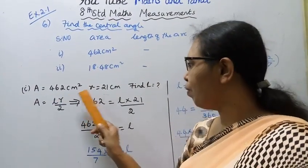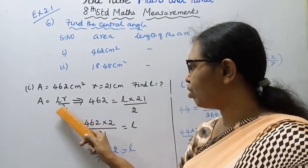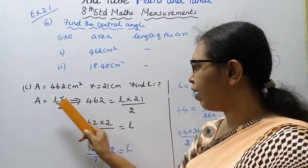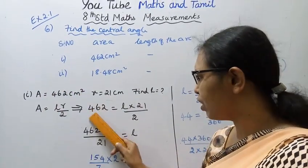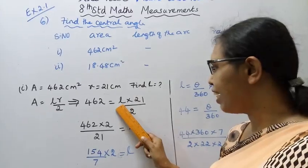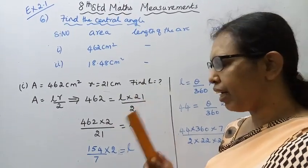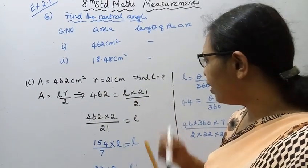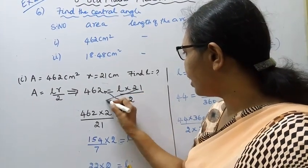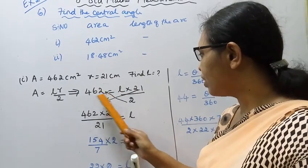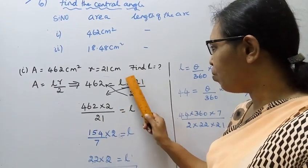Area is 462 centimeters square and R is 21 centimeters. Substituting into the formula: left-hand side equals right-hand side, LR by 2. So 462 into 2 divided by 21 equals L.